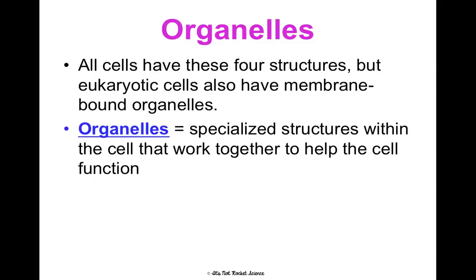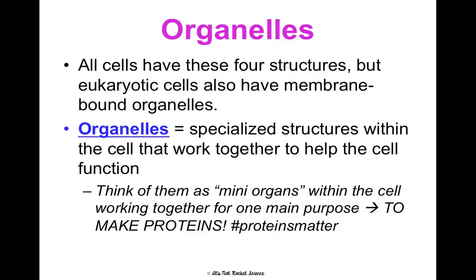Eukaryotic cells, in addition to those four things, have organelles. Organelles are specialized structures within the cell that work together to help the cell function — think of them as mini organs. Just as all the organs in your body work together to keep you alive, organelles all work together for one common purpose: to make proteins. Remember from unit one how many things proteins do — they are so important. All of these organelles, as we go through their structure and function, work together for this common goal.